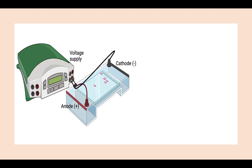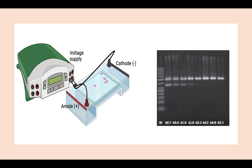Once the PCR reaction is over, you can load your sample and run agarose gel electrophoresis. Since we had different annealing temperatures for the same sample, the gel would look something like this — you can see multiple bands as a result of non-specific binding when the annealing temperature was around 60 to 62 degrees Celsius. However, at the 65.1 degree Celsius condition, you see a very nice, bright single band. This suggests that the ideal annealing temperature for this particular primer pair would be 65.1 degrees Celsius. This is how you optimize your PCR reaction by determining the exact annealing temperature for that primer pair.